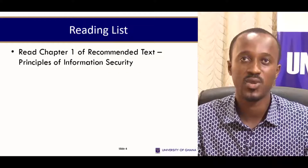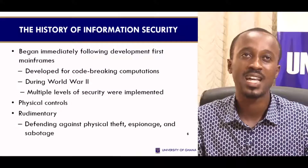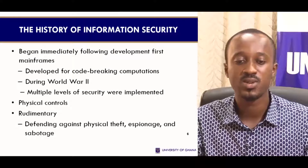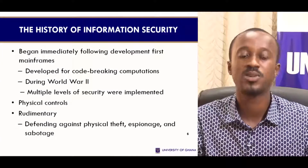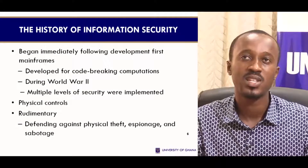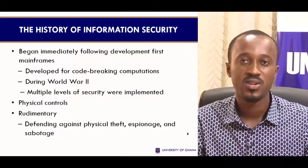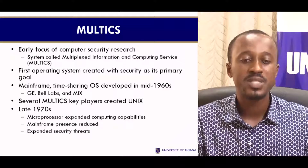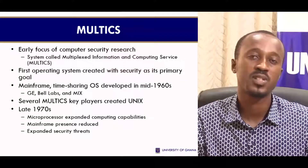Let's start with the history of information security. Information security began as computer security, which started during the Second World War where security was needed for exchanging codes. You hear about code-breaking computations, multi-level security being implemented, physical controls, and so on. This was the revolution that birthed information security — the concern was on securing computer systems used for communication during the war. In that regard, you come to hear of something known as MULTICS, which means Multiplexed Information and Computing Systems. This was an early research focus funded by the Department of Defense in the United States, which was seeking to understand security of computing systems.